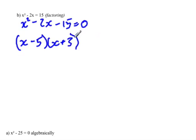Because negative 5 times positive 3 is negative 15, and negative 5 plus positive 3 is negative 2. And so this is all equal to 0.